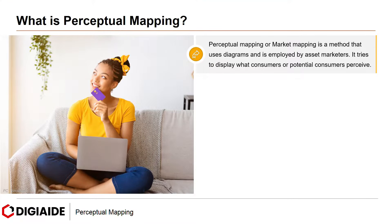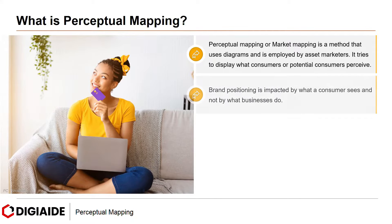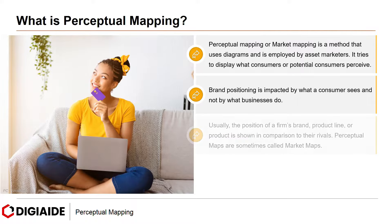Perceptual Mapping or Market Mapping is a method that uses diagrams and is employed by asset marketeers. It tries to display what consumers or potential consumers perceive. For example, a phone manufacturer might think that their product is cool with a younger crowd, but young people might not see it that way. Brand positioning is impacted by what a consumer sees and not by what businesses do. Usually the position of a firm's brand, product line, or product is shown in comparison to their rivals.